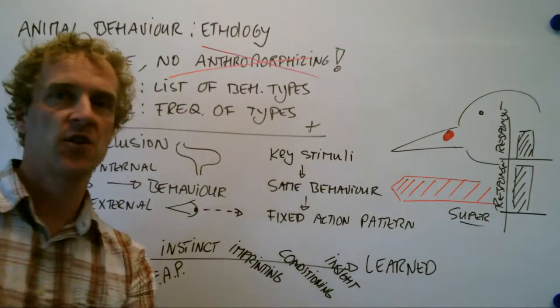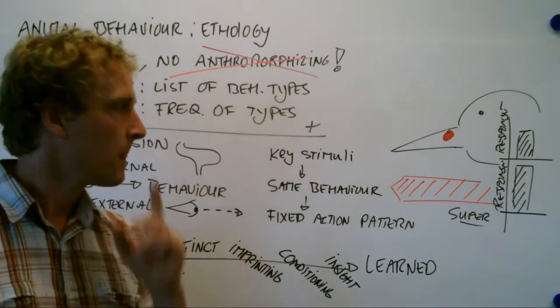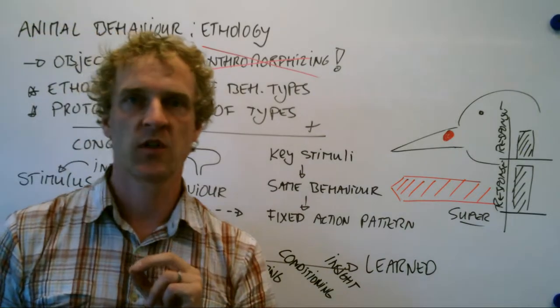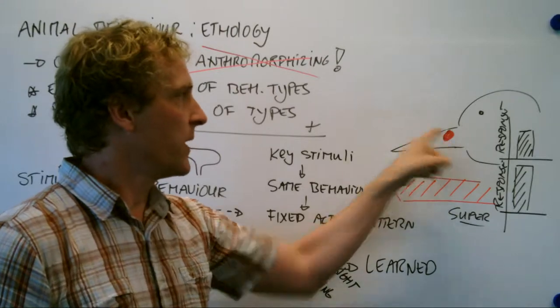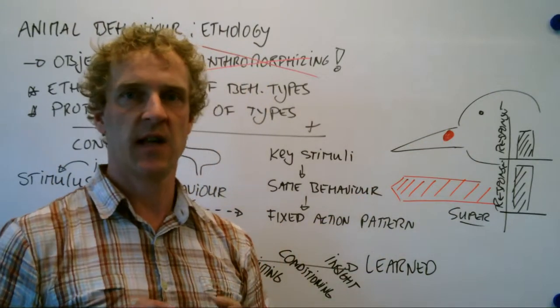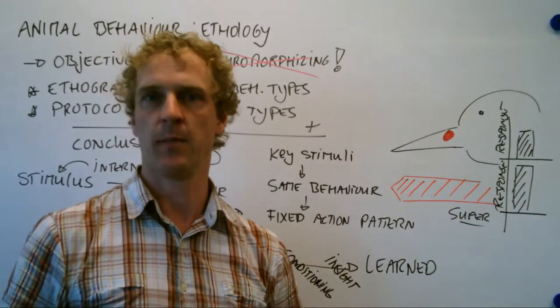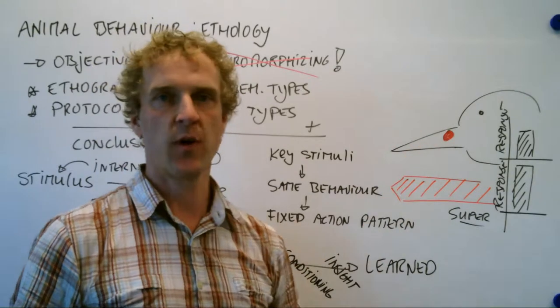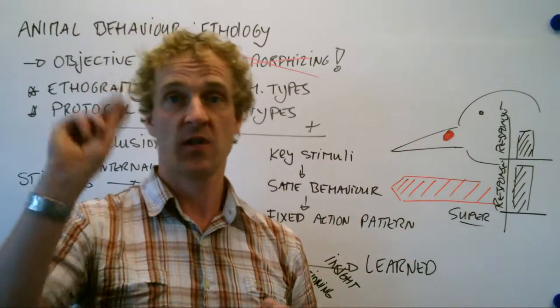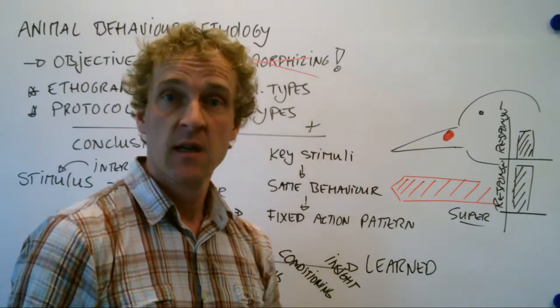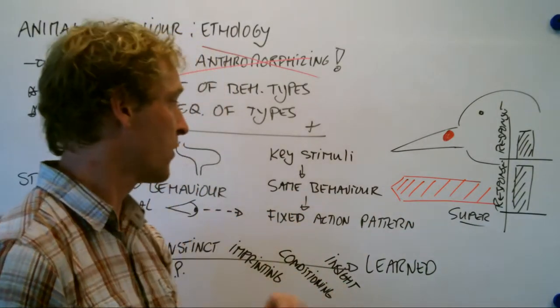Now, we have certain different stimuli. A key stimuli always has the same behavior. For example, in some birds, when the mother hangs over the nest, on the bill is a red spot. Chicks in the nest will always pick at the red spot. No matter what happens. Bill with red spot does actually not need to be their own mother. But if there's a bill with a red spot, the chicks will pick at it. That leads to the same behavior every time. Over and over and over again.